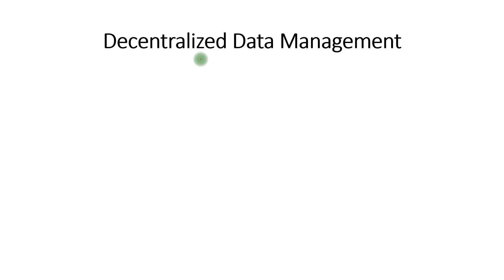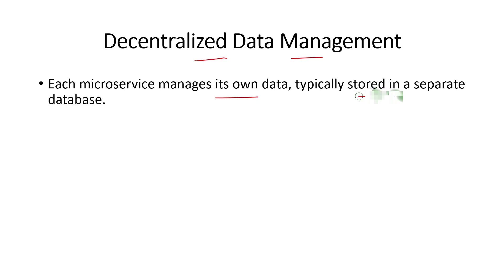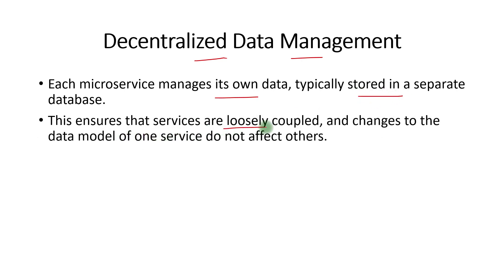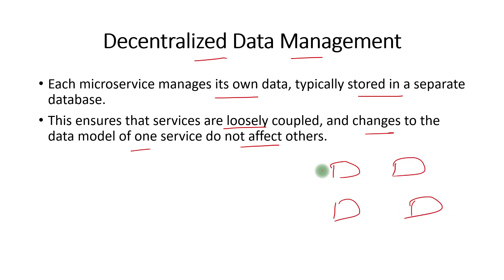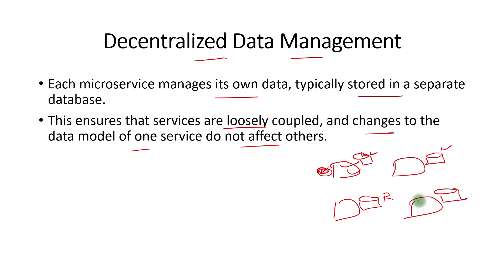The next principle is decentralized data management. Each microservice manages its own data, typically stored in a separate database. This ensures services are loosely coupled and changes to the data model of one service do not affect others. Each service has its own database, which gives a lot of flexibility. You can choose SQL databases, NoSQL databases, Redis, or any other technology best suited for that service's functionality. Microservices architecture enables decentralized data management, and two microservices should not connect to the same database, as that will create problems in the long run.